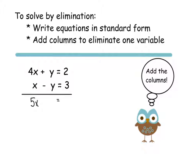Then I have an equal sign, and 2 plus 3 is 5. So I really have the equation 5x equals 5. I can now divide both sides by 5. So I have x equals 1.